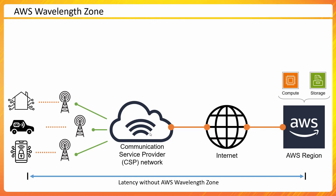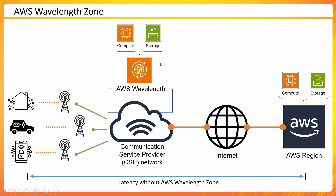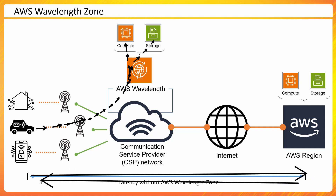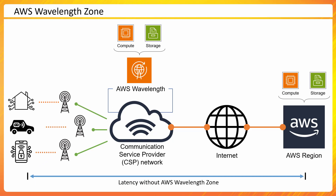Wavelength Zone explores the possibility of hosting compute services directly on the communication service provider's network. These CSP companies already have huge data centers and places where they run their equipment and keep servers available. AWS leverages that CSP network infrastructure and hosts services there. So the CSP is hosting mobile services and, in collaboration with AWS, now also has the capability to launch compute and storage services. Data from a smart car can be stored and processed directly there, without the lengthy path to the region, saving a lot of time and resulting in lower latency.